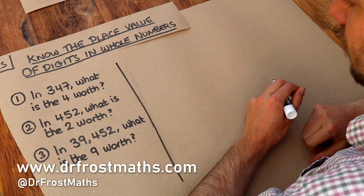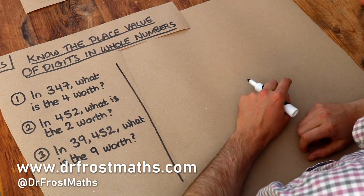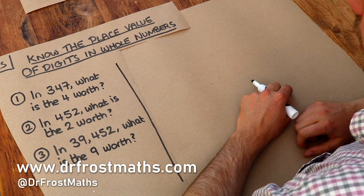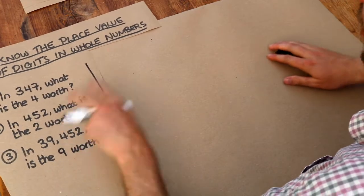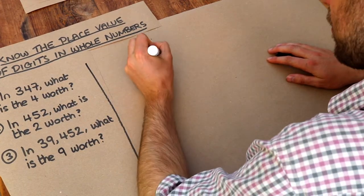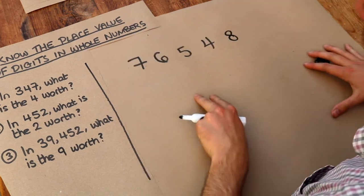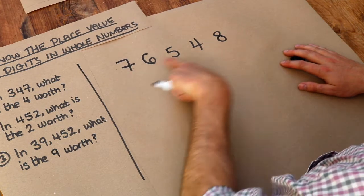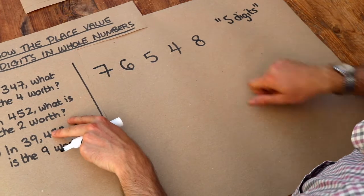Hello and welcome to this Dr Frost Maths key skill video on knowing the place value of digits in whole numbers. Now what do I mean by place value? Well, when you have a number it consists of a number of digits — a number of single symbols. So this we say is a five digit number because it has five symbols on it.